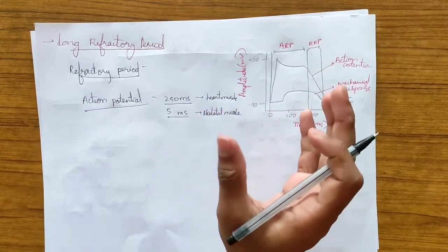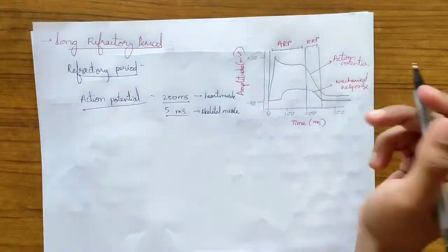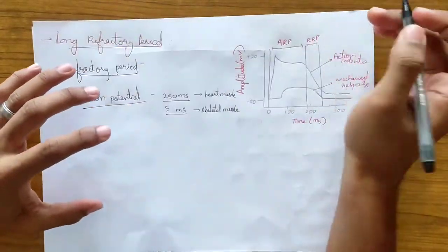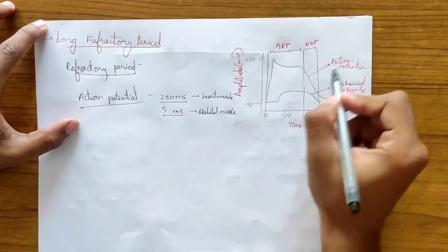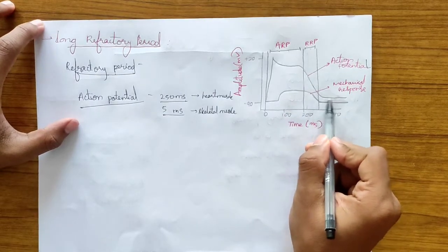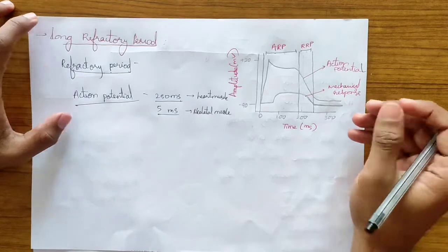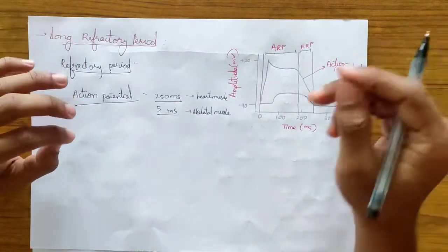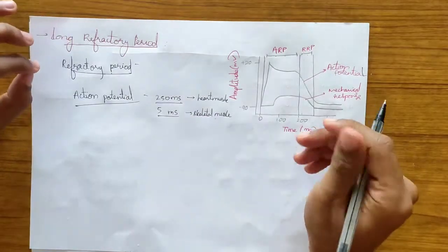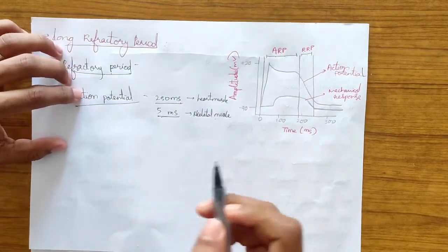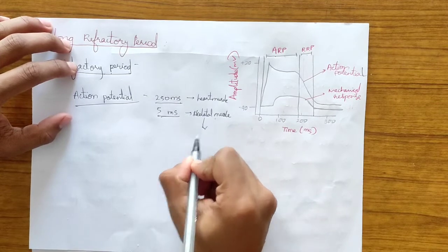As seen in the graph, there is an absolute refractory period and a relative refractory period. The action potential of the cardiac muscle aligns with the mechanical response, so the relative refractory period ends only after the mechanical response is nearly complete. Even if you provide a stimulus during this period, there will be no additional contraction. In skeletal muscle, because the action potential duration is much shorter (5ms), a new mechanical response can be generated during the first, allowing tetanization — which is not possible in cardiac muscle.